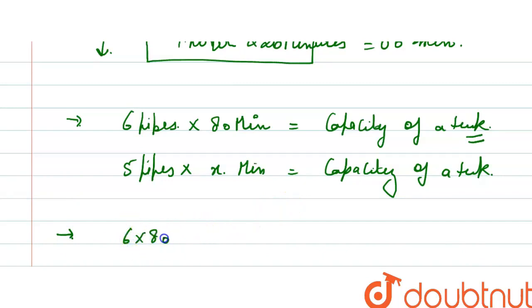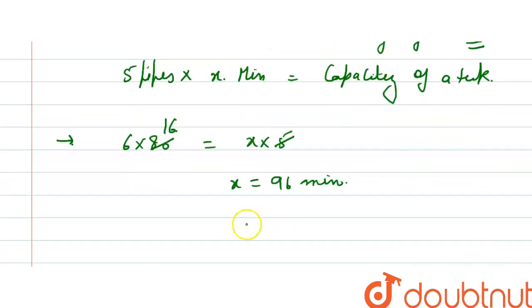So 6 multiply 80 is equal to x multiply 5. So 5 cancels 80 by 16 and 16 multiply 6 is 96. So 5 pipes will take 96 minutes, that is equal to 1 hour and 36 minutes.